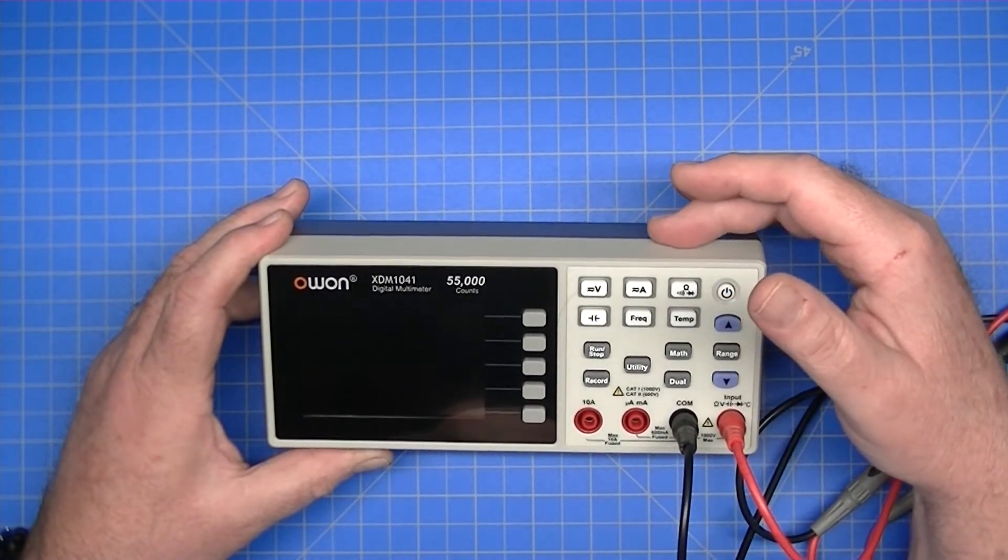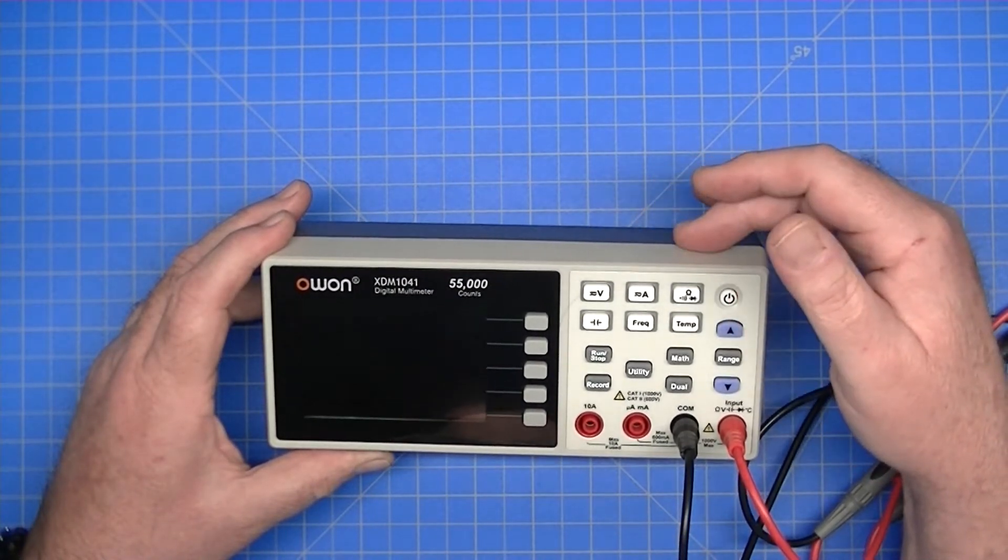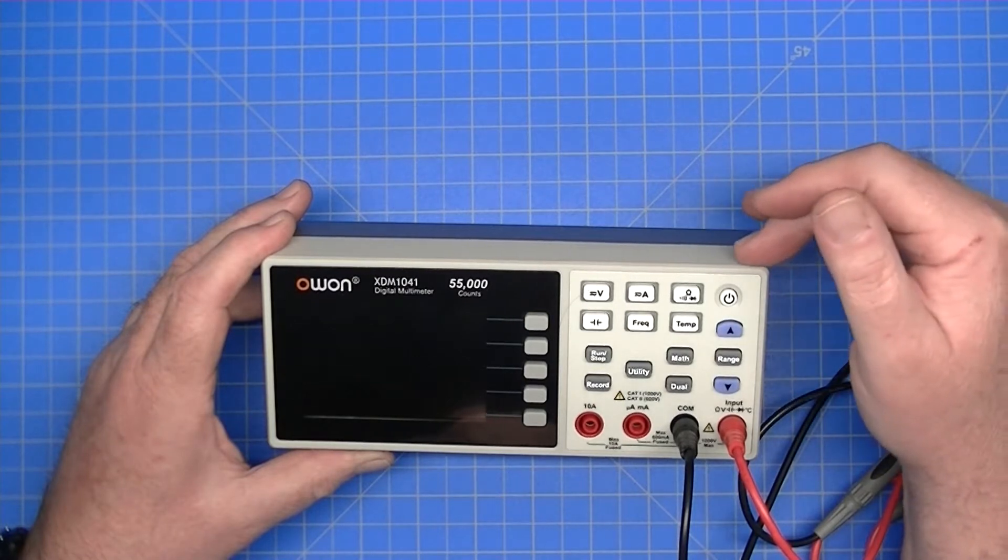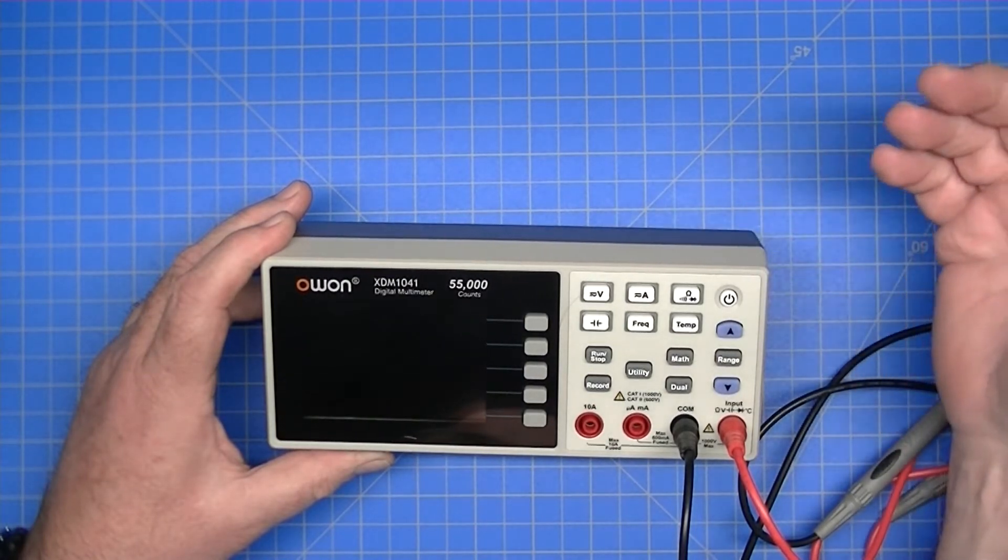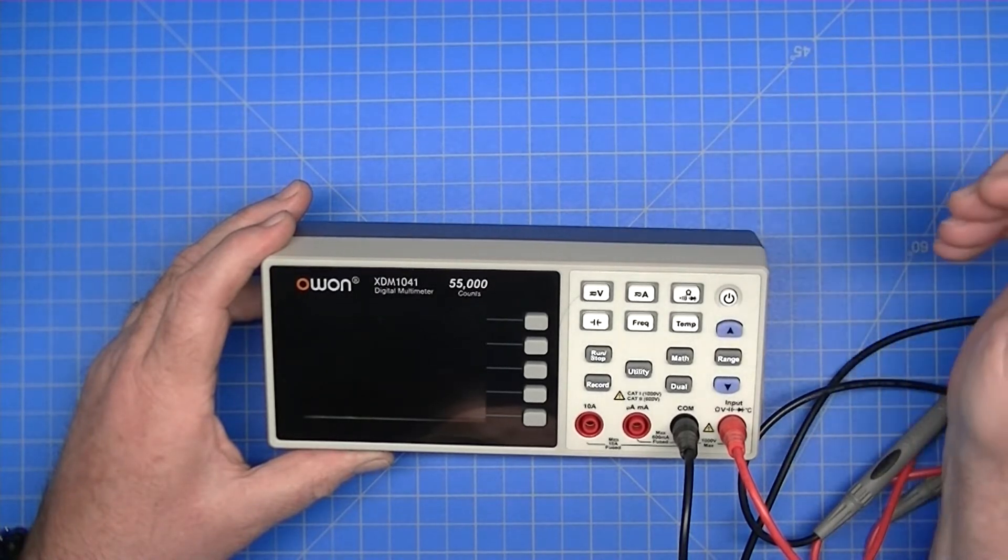You could get this same meter for probably some less cash if you bought it from AliExpress or Banggood, one of those sites, but then you have to wait six, eight weeks for shipping. So I just went ahead and picked it up from Amazon.